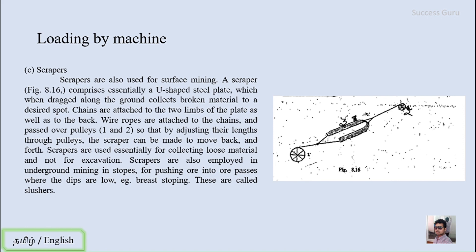Scrapers are also used for surface mining. A scraper comprises essentially a U-shaped steel plate which, when dragged along the ground, collects the broken material to a desired spot. As you can see in this sketch, the U-shaped steel plate collects the broken rock material. Chains are attached to the two limbs of the plate as well as the back. Wire ropes are attached to the chain and passed over a pulley.